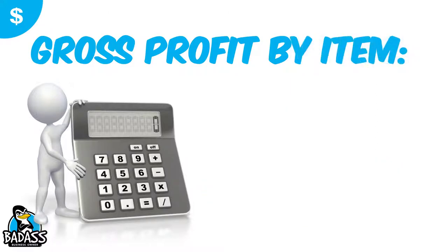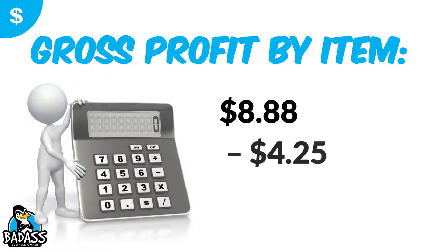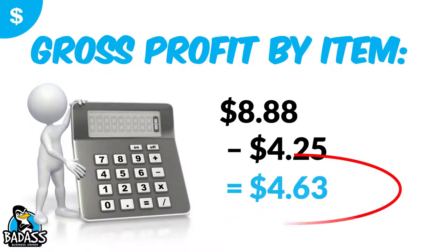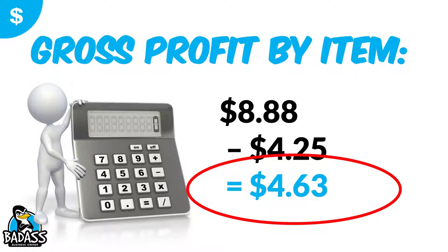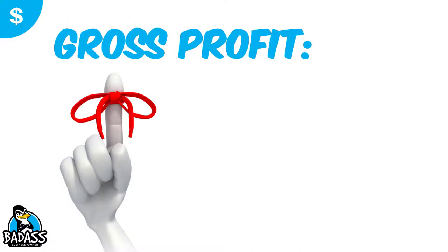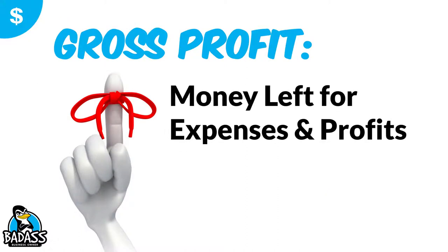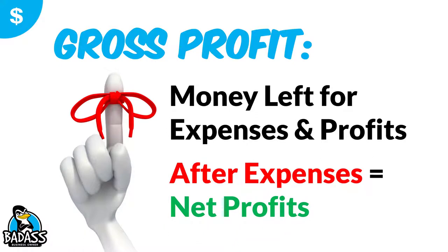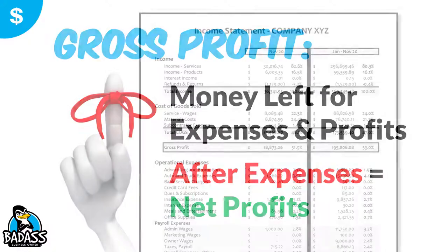In this case it's $13,000. If we're looking at a specific item — let's say we sell it for $8.88 and the cost of goods is $4.25 — then the gross profit of that item is $4.63. Keep in mind, your gross profit is the money left for your expenses and your profits. After your expenses is where we get net profits. Just remember: gross profit is before those expenses — it's just sales minus cost of goods. After you take off those expenses, you get net profits.